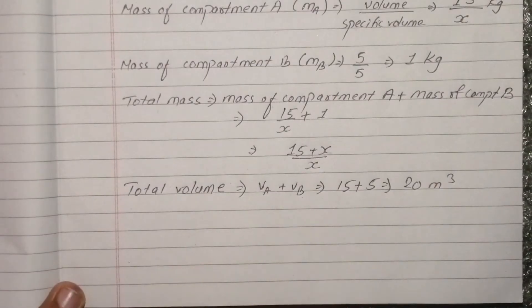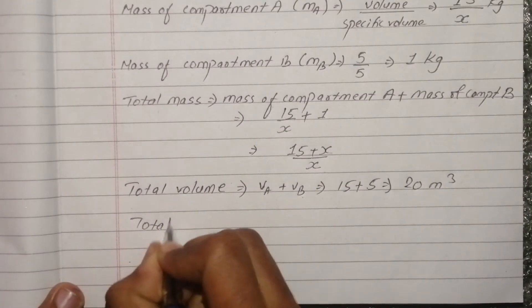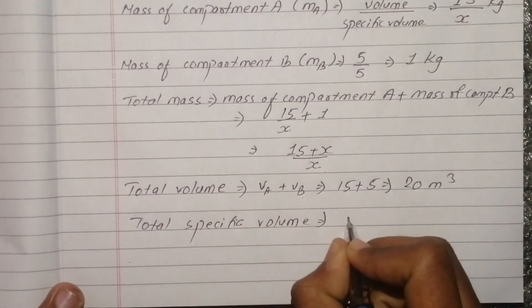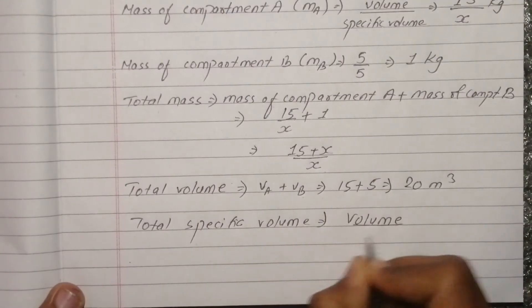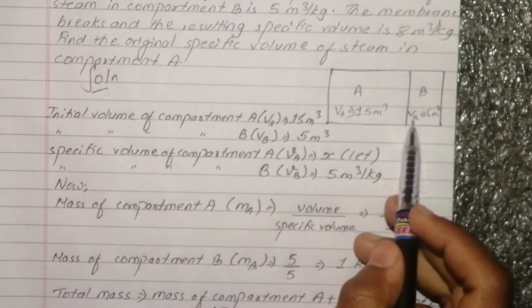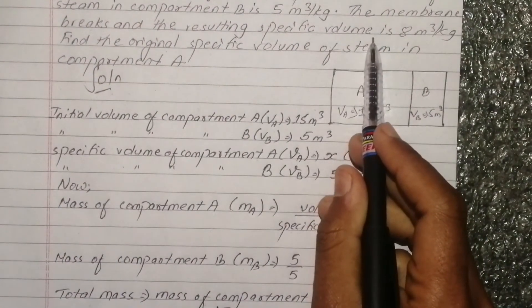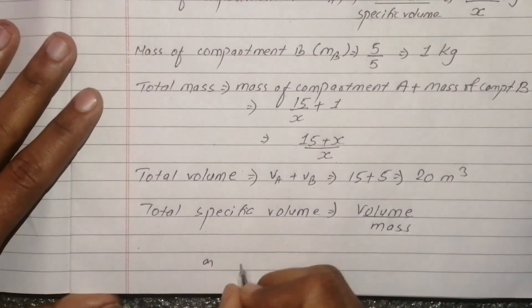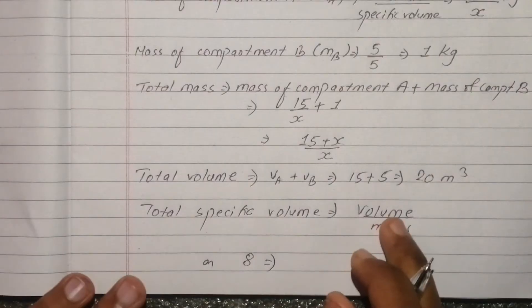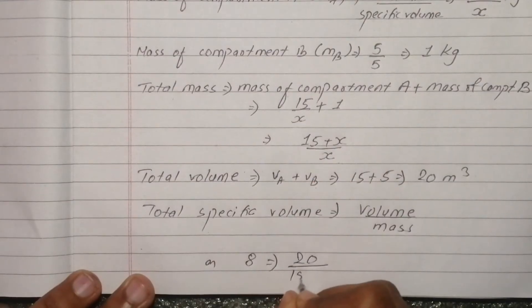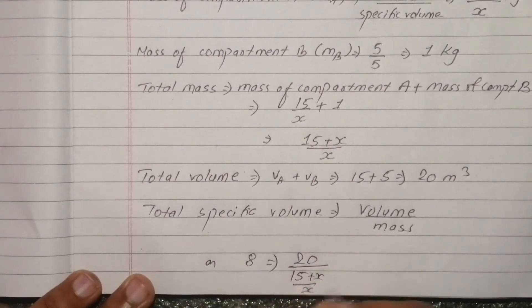Total specific volume formula: specific volume equals total volume upon total mass. The resulting specific volume is given as 8 meter cube per kg. Total volume is 20, and total mass is (15 + x) over x.